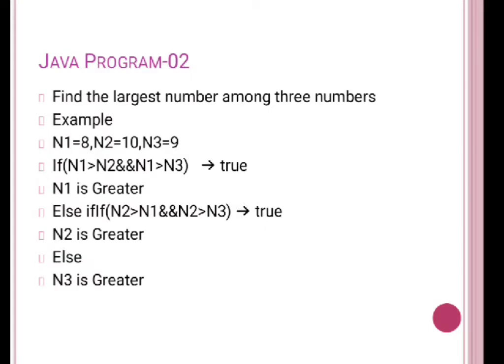Now let's talk about the second program where we use if-else-if. We use it here because we are checking three numbers and finding the largest among them. We need to understand the conditions: for checking two relational expressions, we must use logical operators. In the first condition, if n1 is greater than n2 AND n1 is greater than n3, then n1 is the largest.